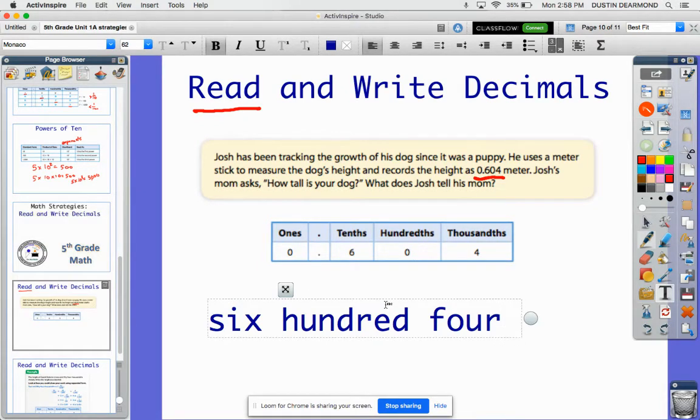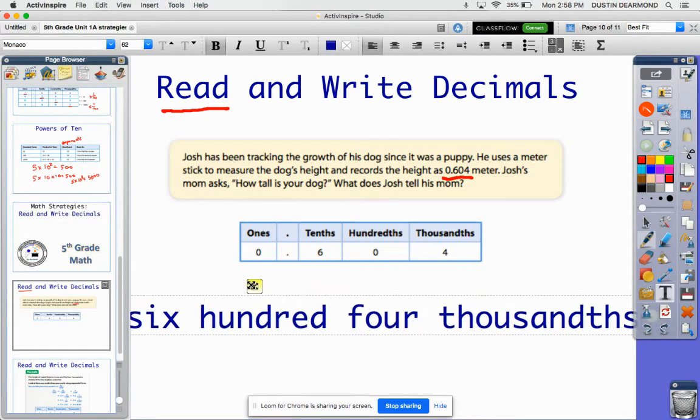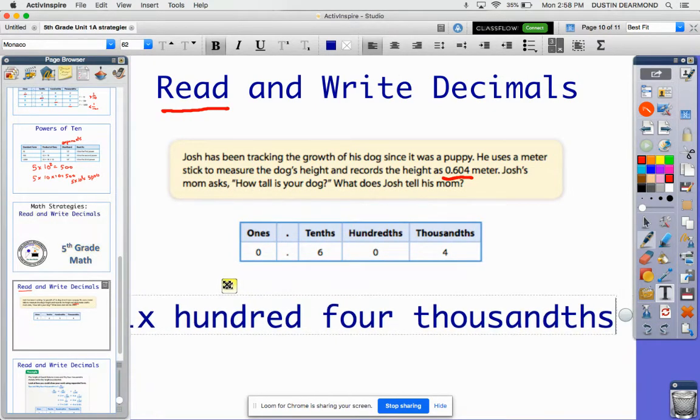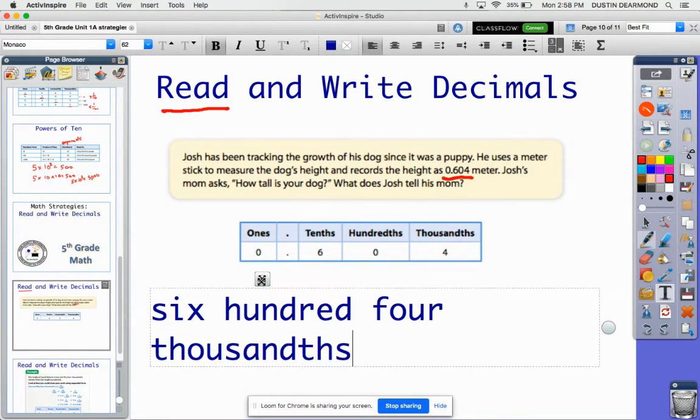But I'm going to call it by the last piece of the puzzle here, and that would be the thousandths place. So I'm going to read it just like I would read a whole number, 604, but it's going to be labeled with thousandths. So 604 thousandths, we give it the name.